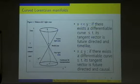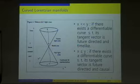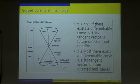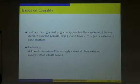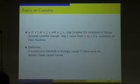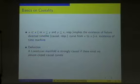We denote by this notation if there exists a differentiable curve such that its tangent vector is always future-directed and time-like. This is the example of a time-like curve. And we denote by this if there exists a piecewise differentiable curve such that its tangent vector is always future-directed and causal. If there exists a point x that satisfies this, it implies that there exists a future-directed time-like curve from x to x, which implies the existence of a so-called time machine. So many theoretical physicists want to discard this case.